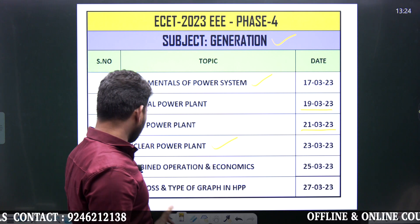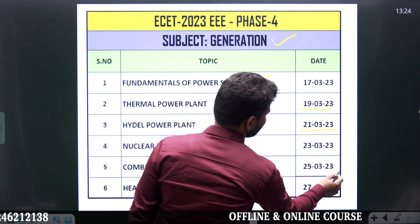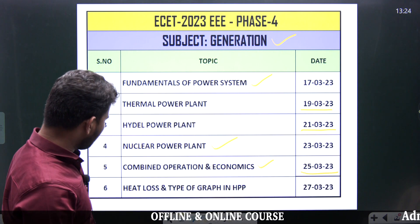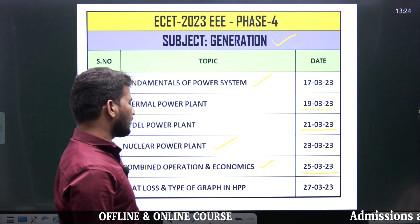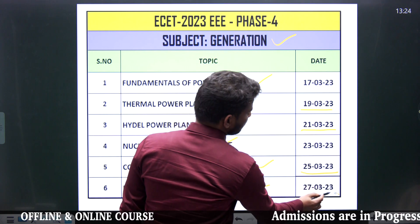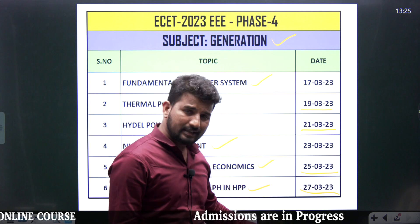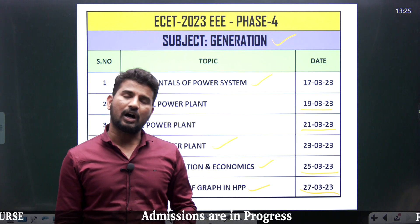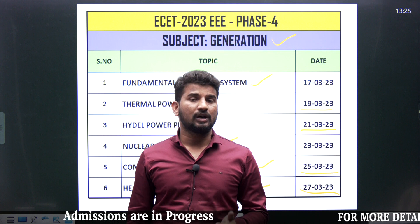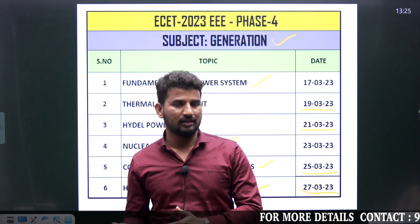The next topic will be Combined Operation and Economics, conducted on 25th of March. And the next topic is Heat Loss and Type of Graph in Hydel Power Plant, conducted on 27th of March. This is the last exam in Phase 4, and after this we are going to come with another phase. Again, I am requesting everyone to watch the videos and prepare well for the exam.